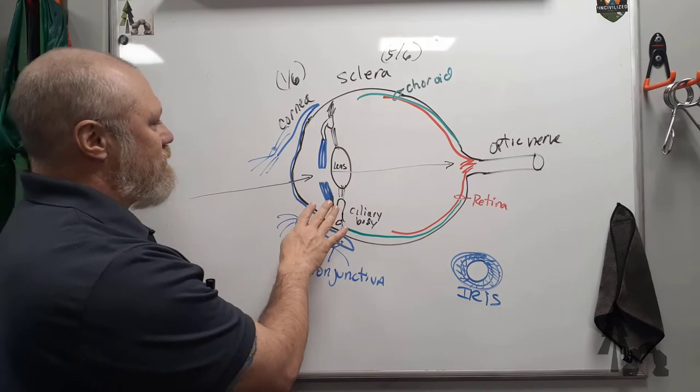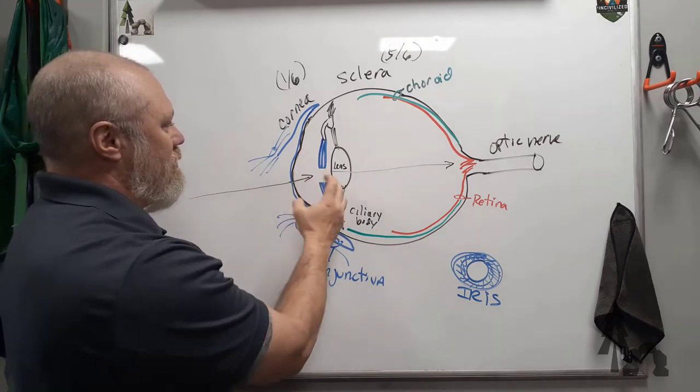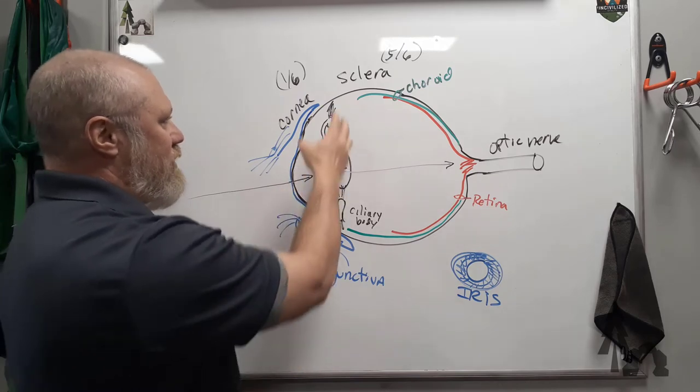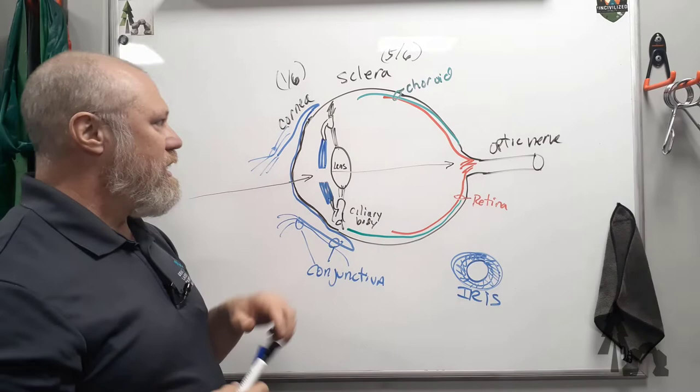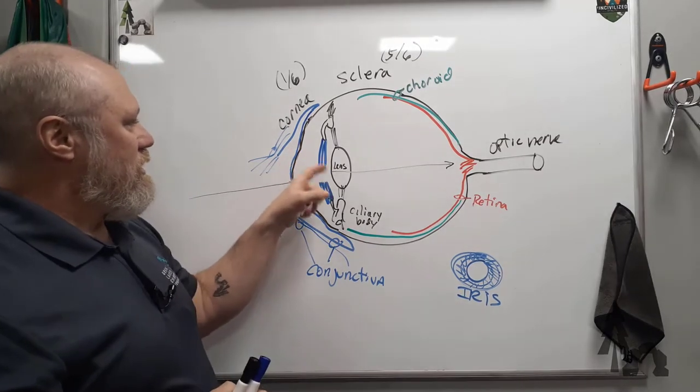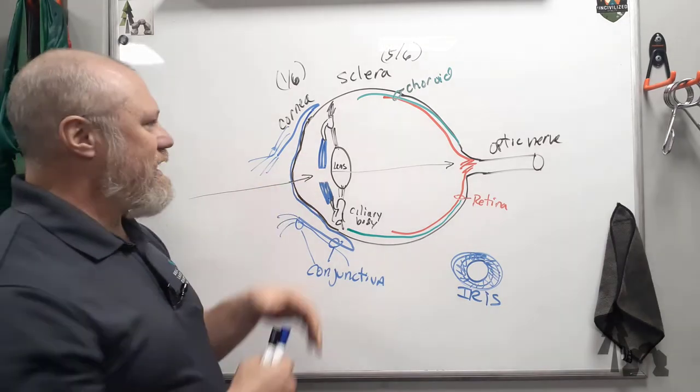But you've got the area anterior to the iris and under the cornea, which is called the anterior chamber. The anterior chamber, or the fluid that's in there, is the aqueous humor, because it's more water-like.